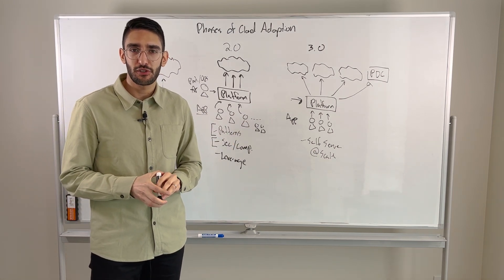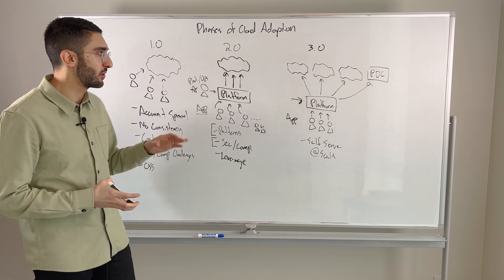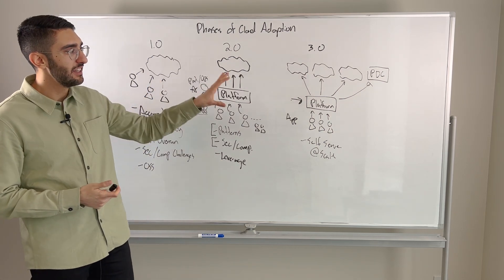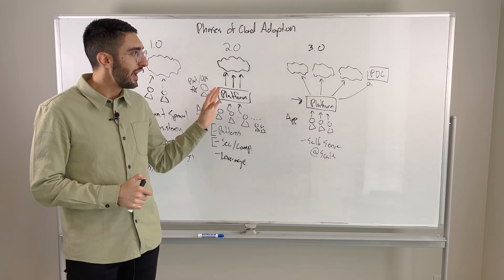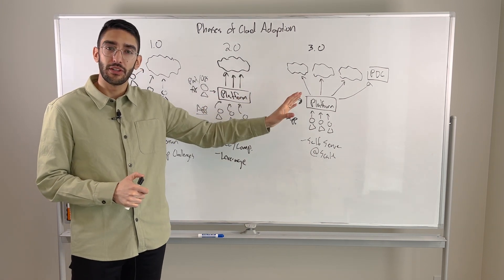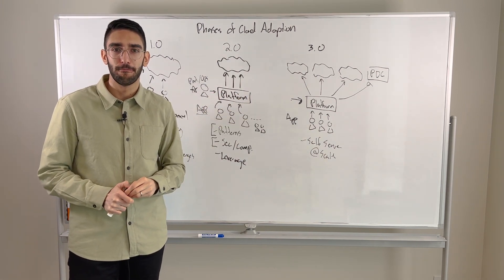Hopefully this was helpful in terms of just the patterns we see as organizations go from tactical cloud adoption to really enabling cloud as a strategic platform, and then moving from that from a single cloud into a multi or hybrid cloud pattern. Thanks so much.